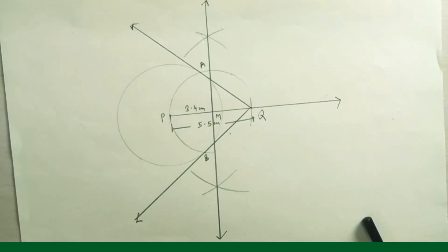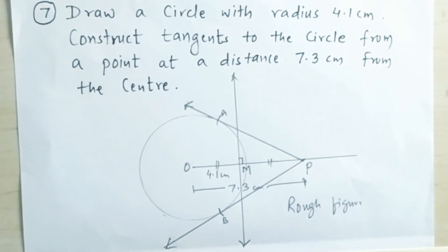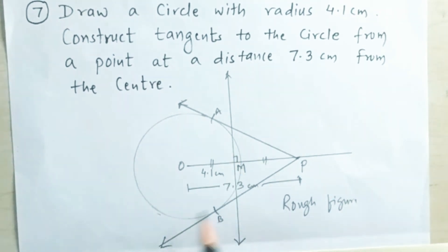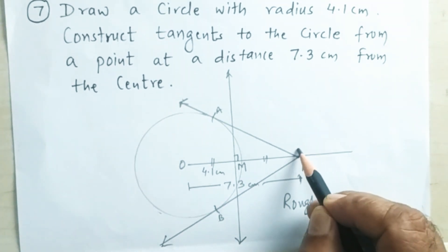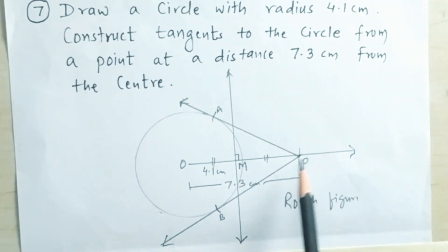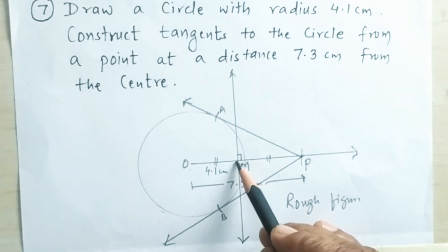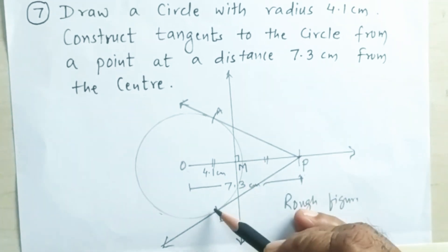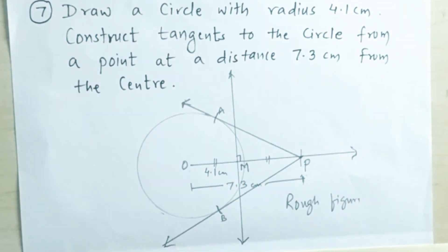Seventh example: draw a circle with radius 4.1 centimeters and construct tangents to the circle from a point at a distance of 7.3 centimeters from the center. We will draw the circle with center O of radius 4.1 centimeters, take point P at a distance of 7.3 centimeters on the ray, draw the perpendicular bisector of OP, then from point M draw arcs with distance equal to OM and draw the tangents passing through point P. Here is the rough figure.